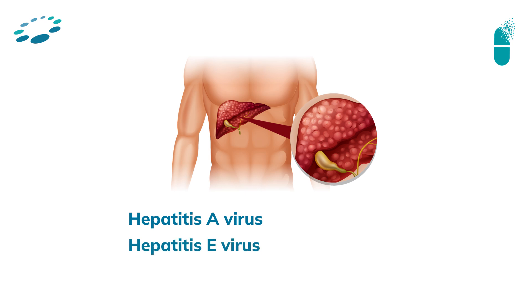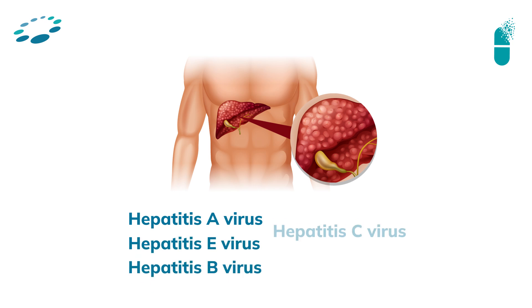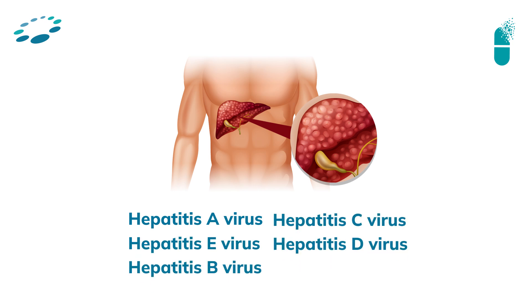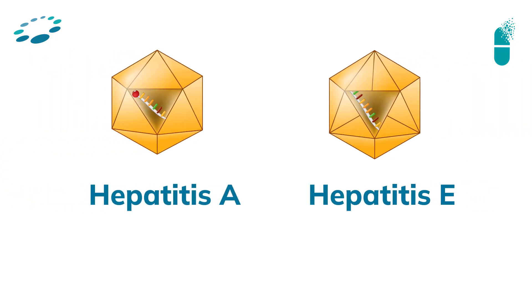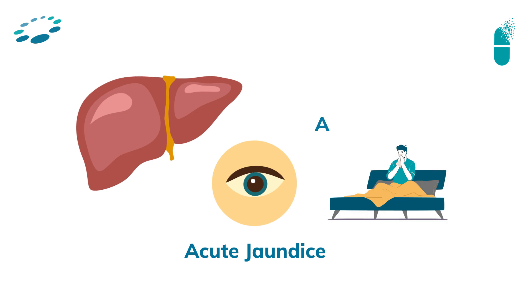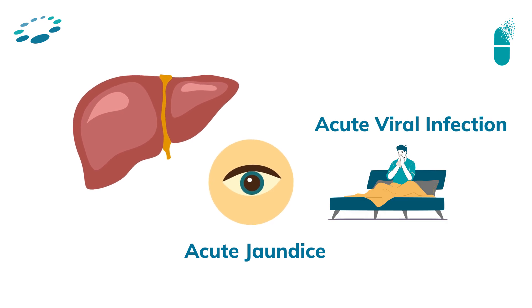We have hepatitis A virus, hepatitis E virus, hepatitis B, hepatitis C, and hepatitis D. Hepatitis B and hepatitis C are called silent epidemics — because they are very silent and do not give any symptoms until a very long time. Hepatitis A and hepatitis E generally cause acute jaundice and acute viral infection, and very rarely progress to chronicity.